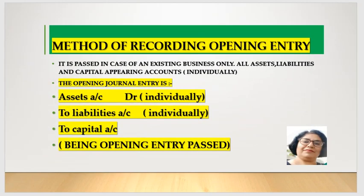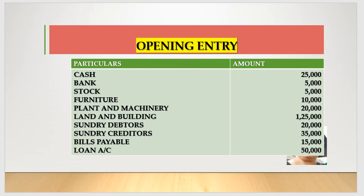So in which way do we record it? Asset accounts individually - like cash account, financial account, bank account - we have to debit each asset individually. We have to credit each liability account. And to capital account, credit it. In the narration we have to write 'being opening entry passed.' The asset account is debited, liability account is credited, and capital account is credited.